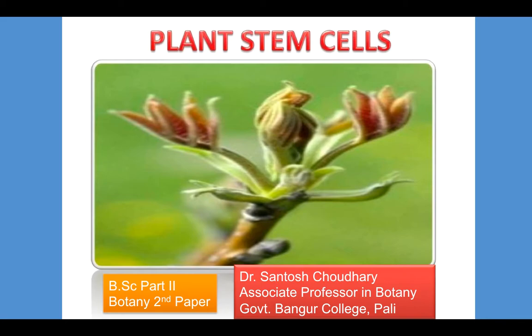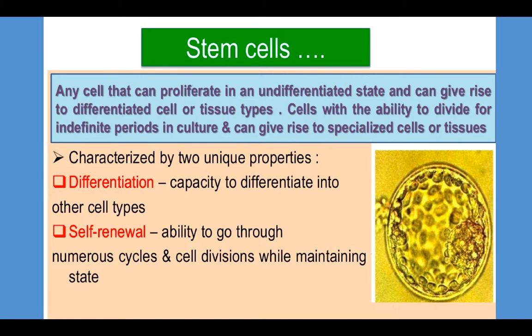Today, I will take a small topic: the concept of stem cells in plants. Most cells after repeated divisions tend to differentiate into cells with specialized functions. In contrast, stem cells have the ability to differentiate as well as self-renew. So they are characterized by two unique properties: differentiation and self-renewal.